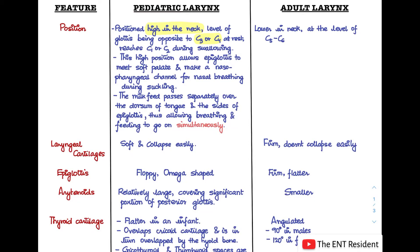The milk feed the baby receives passes separately over the dorsum of the tongue and the sides of the epiglottis, allowing the infant to breathe and feed simultaneously. This is why the higher laryngeal position is so important for infants. In adults, the larynx is located lower in the neck at the level of C5 to C6.